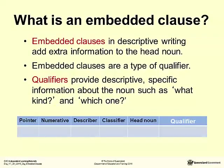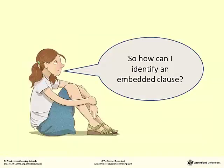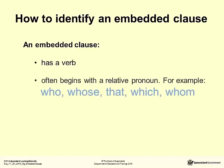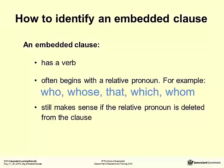Do you remember this table for breaking down a noun group? How can I identify an embedded clause? You can spot the embedded clause using a few simple rules. Firstly, an embedded clause has a verb. It often begins with a relative pronoun — for example, who, whose, that, which, or whom. It still makes sense if the relative pronoun is deleted from the clause.